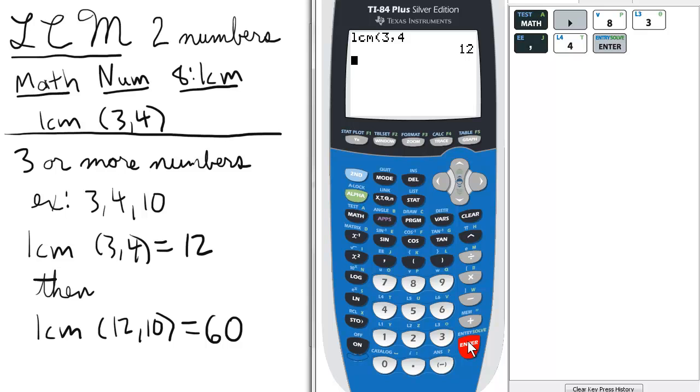Now, let's say we have to find the LCM of 3 or more numbers, in this case 3, 4, and 10. We've already found the LCM of 3 and 4, which is 12.